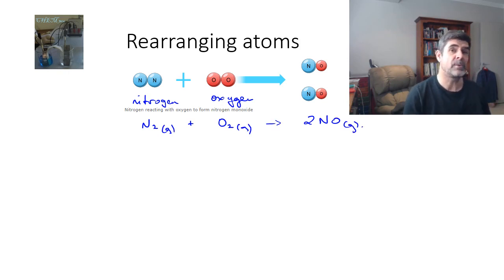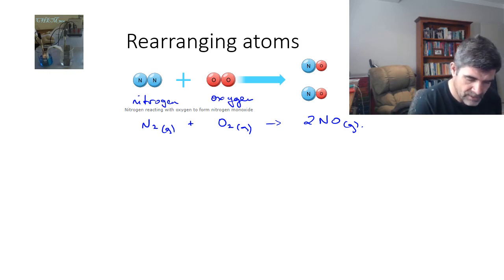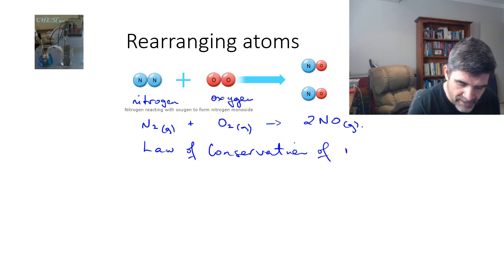One of the things that's very important when we're looking at our modelling is our modelling helps us to identify the fact that the atoms, in this case, are being rearranged. There's no additional atoms and there's no loss of atoms. So this sort of modelling helps us to identify the law of conservation of mass.